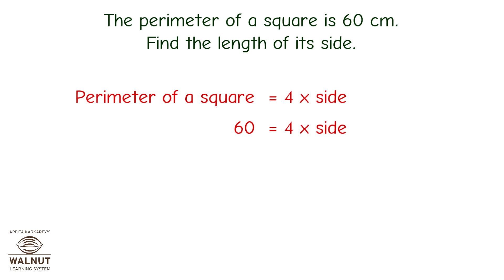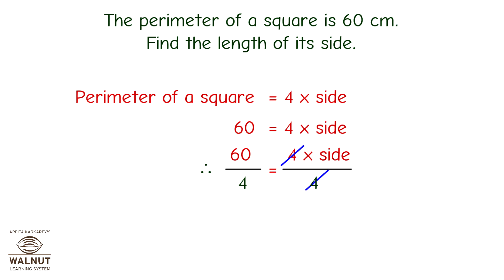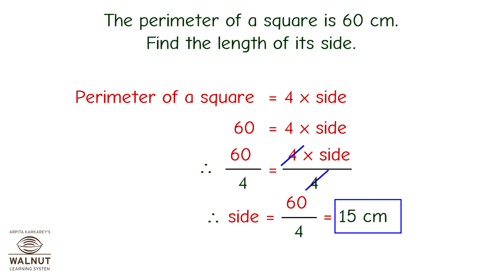Here we can use the division property, so we divide both the sides by 4. Therefore, side is equal to 60 divided by 4, which is equal to 15. And that is the side of the square.